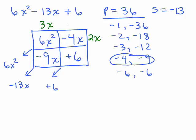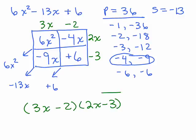2x times what is negative 4x? That's going to be negative 2x. And negative 2x times what gives you 6? It's got to be, I'm sorry, that was just a negative 2, not a negative 2x. Negative 2 times negative 3. So this factors to 3x - 2 times 2x - 3.